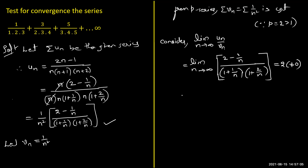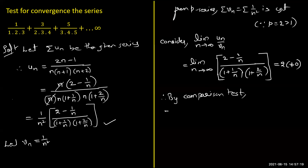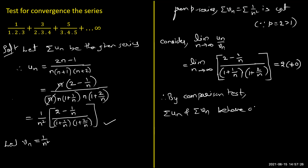Since this limit is finite and nonzero, by the comparison test, both summation u_n and summation v_n behave alike. Since summation v_n is convergent, therefore summation u_n is also convergent.